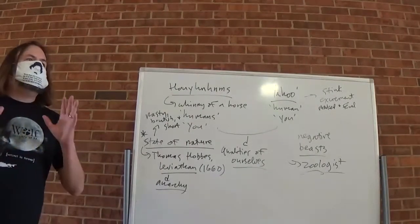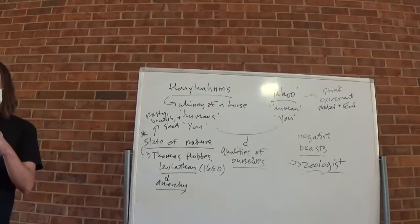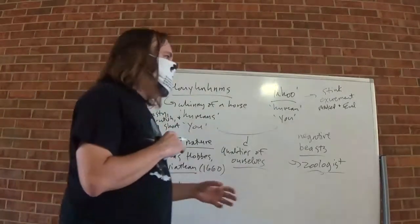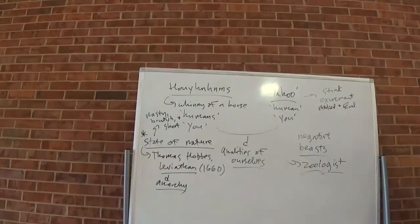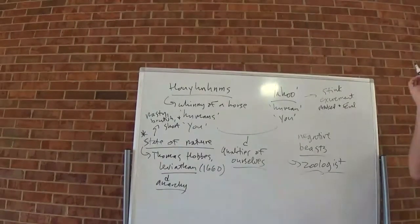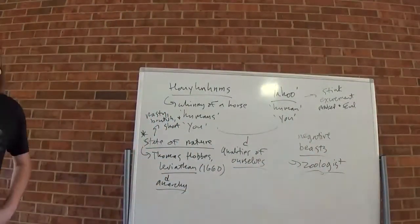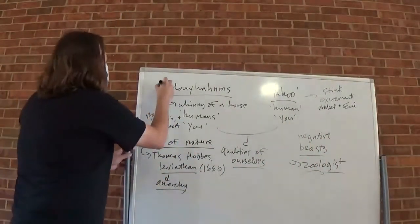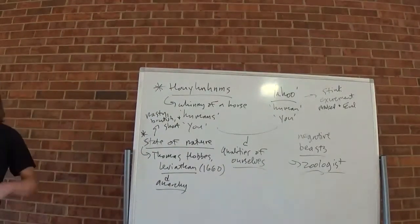And I think, to some extent, this is what we get with the Yahoos. What Swift is giving us is human beings in a kind of state of nature, taken to its extreme. But there is one external authority that they recognize. What is the authority that the Yahoos recognize? They obey the Houyhnhnms. At least when one is present.